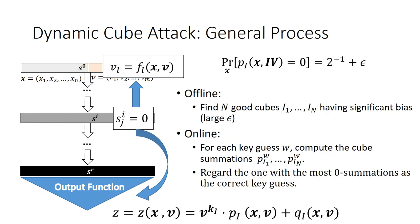In the offline phase, the adversary should find many qualified cubes having significant bias when Sij is successfully nullified. What is referred to as significant bias means the epsilon in the equation is large. With these cubes, in the online phase, we need to guess the key bits involved in the ANF of the dynamic value and compute the cube submissions for each key guess to acquire the bias, indicating the number of zeros in the n-cube submissions. The key guess corresponding to the most significant bias is most likely to be the correct one.